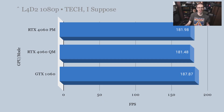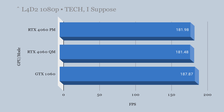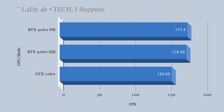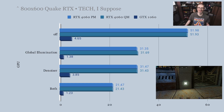Left 4 Dead 2: at 1080p the 1060 actually has a slight frame rate advantage, but at 4K the 4060 gets higher frame rates — so the benefit shows at higher resolutions when the CPU isn't being taxed. Quake RTX is expectedly one-sided, with a significant difference if you want any kind of ray tracing.